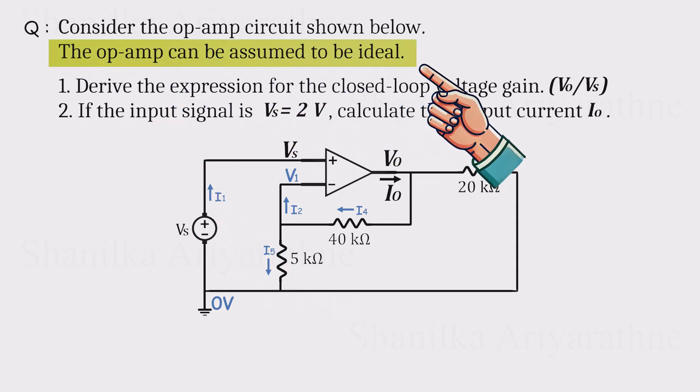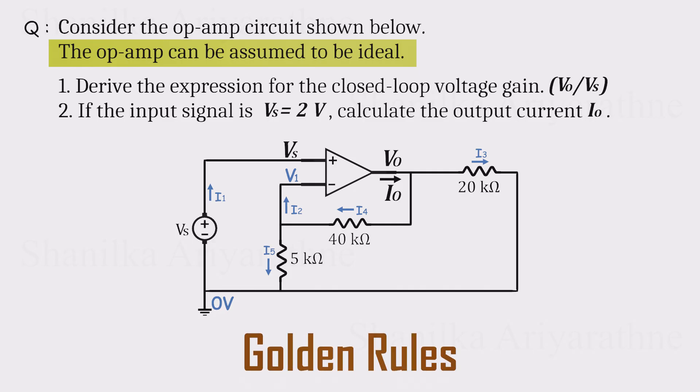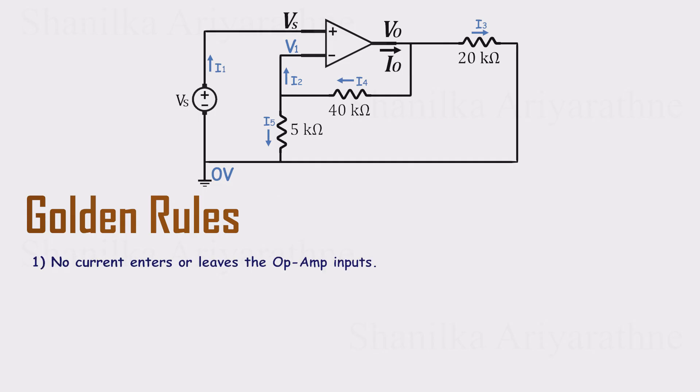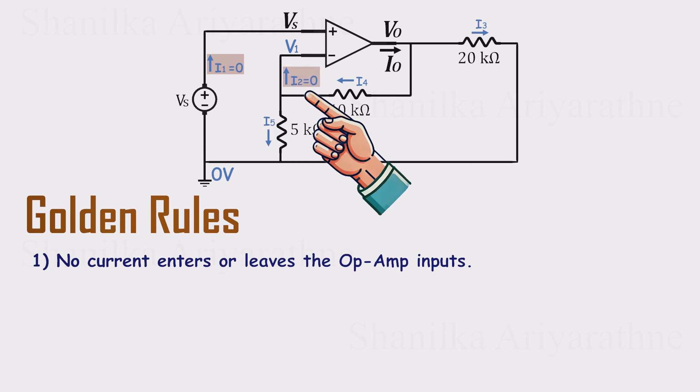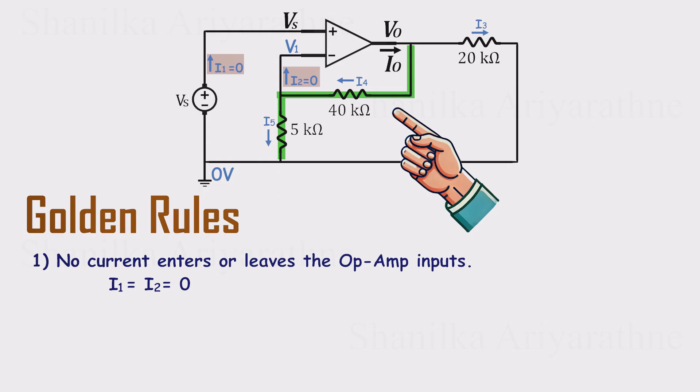We're told the op-amp is ideal. With an ideal op-amp, in a negative feedback configuration, whether inverting or non-inverting, we can use the two golden rules. Golden rule 1, no current flows into the op-amp inputs. So I1 equals 0 amps, and I2 equals 0 amps. If I2 is 0, the same current must flow through the 40 kiloohm and the 5 kiloohm resistor in that feedback path. That means I4 equals I5. That's our first relationship.